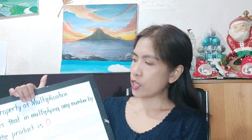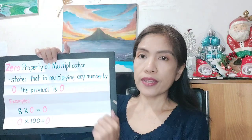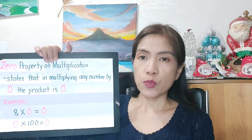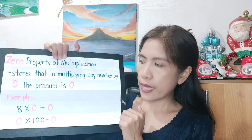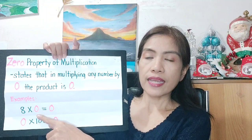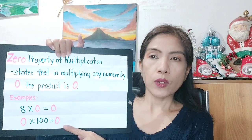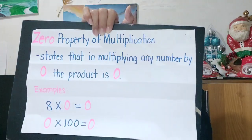The zero property of multiplication states that in multiplying any number by zero, the product is zero. Even if you multiply 1,000 by zero, the answer is still zero. For example, 8 times 0 gives us 0, and 0 times 100 gives us 0 as well. This is the zero property of multiplication.